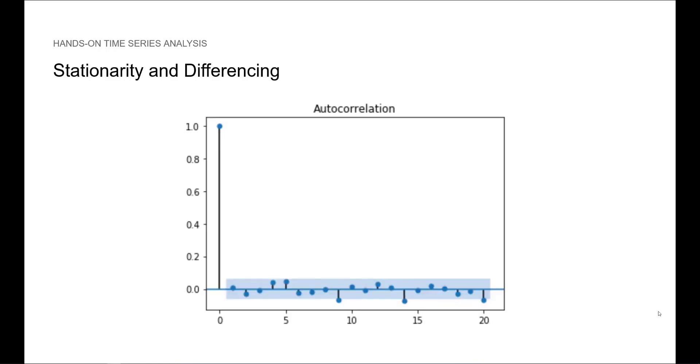Here we see again the ACF of white noise, and so we know that it is a stationary process. So now, you know how to recognize stationarity by looking at the ACF plot.